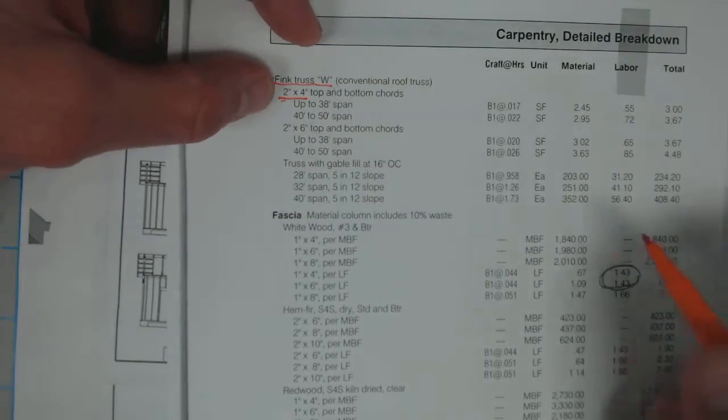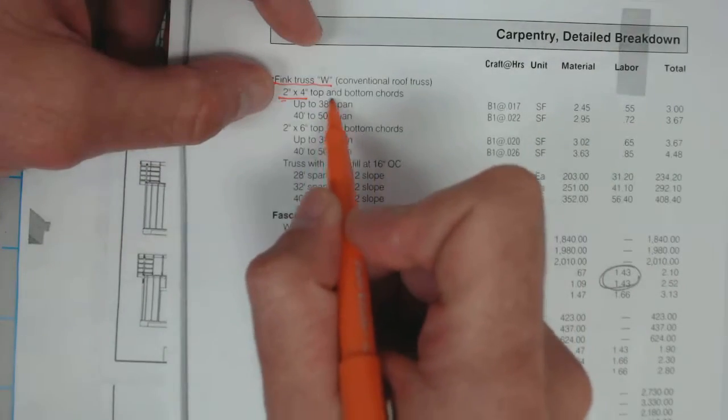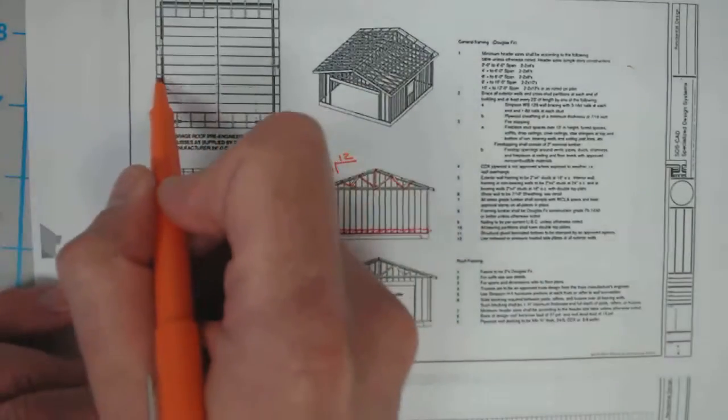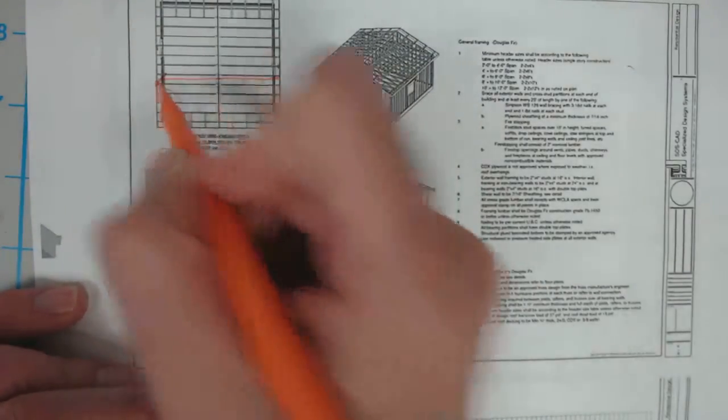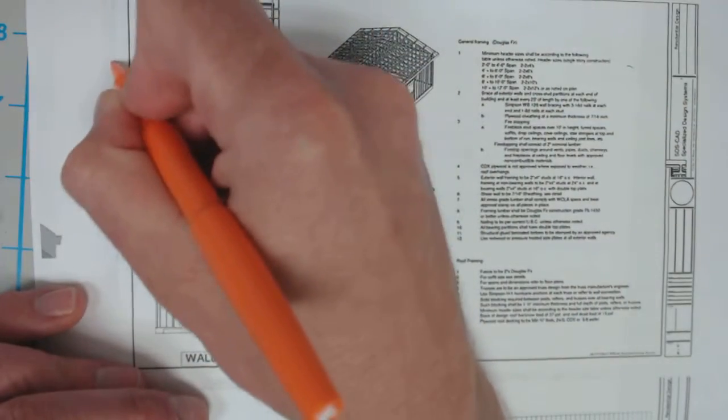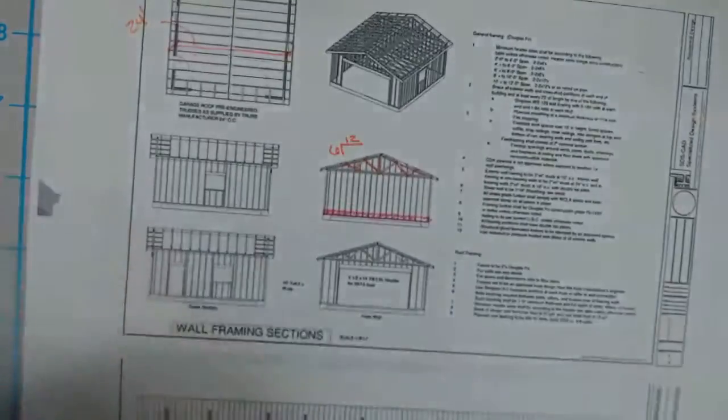We're using two by four top and bottom chords for that, and we do not have anything over a 38 foot span. Anything up to a 38 foot span is the width of the building from one side to the other. Our span is only 24 feet, so we've got a 24 foot span for this building, so we know we can use that.